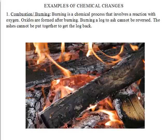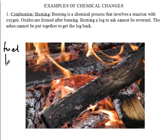Let's see some examples of chemical changes. First of all, let's talk about combustion or burning. Combustion or burning takes place in the presence of oxygen. Before a substance can burn, there are three things needed: we need our fuel, our heat source, and our oxygen. These are the three things we need before burning can take place.